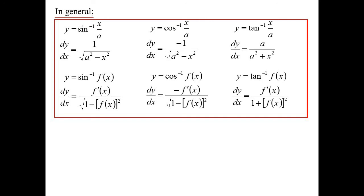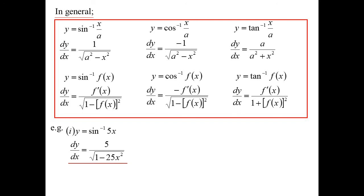Let's look at some examples. If we have inverse sine of 5x, I could do it the quick way with x over a, or I could think of it using the general form: derivative of 5x is 5, over the square root of 1 minus 5x squared — that's 25x squared — and I get it in one line. If I had done it the other way, a is 1/5, and we'd end up with 1 over the square root of 1/25 minus x squared, then you've got a fraction on a fraction, and eventually you'll get there after multiplying through.